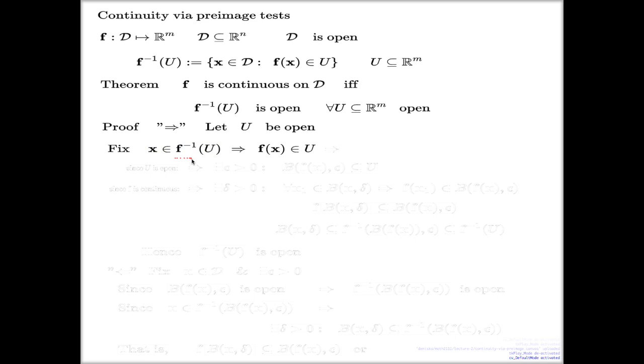The point being in a preimage is the same as the image of that point being in U itself. That's the definition here. U is assumed to be open.